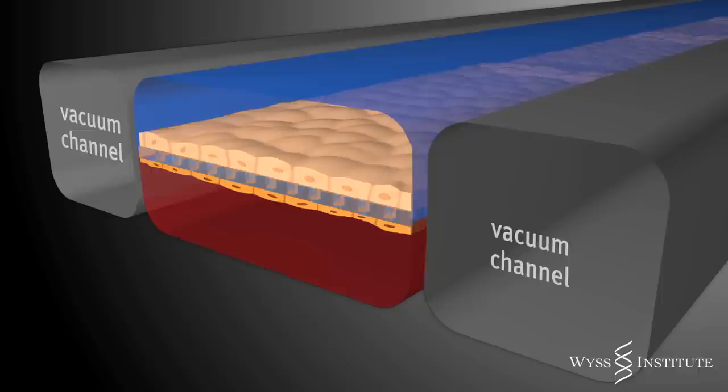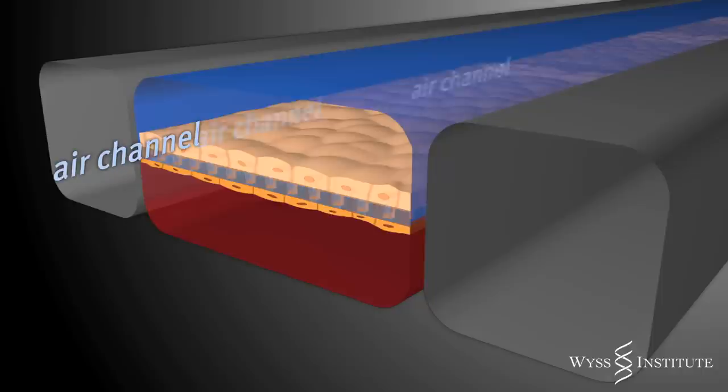Application of cyclic suction in side channels makes the entire flexible sheet and cells stretch and relax rhythmically, just like our lung cells do when we breathe.